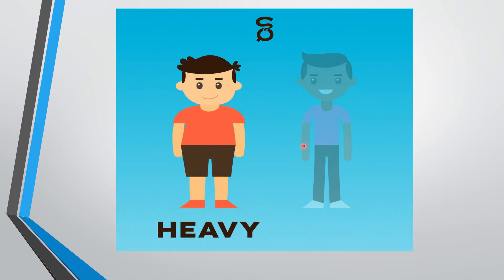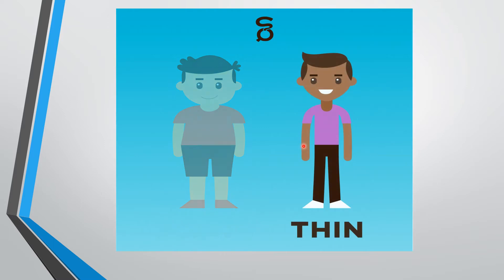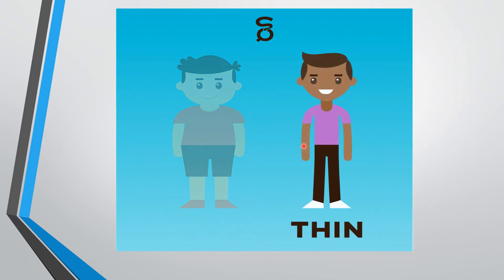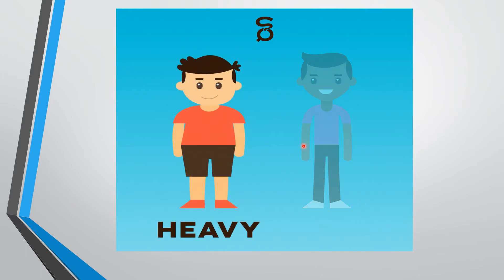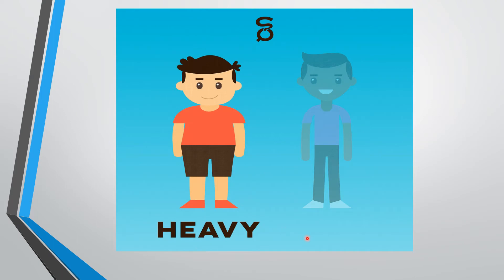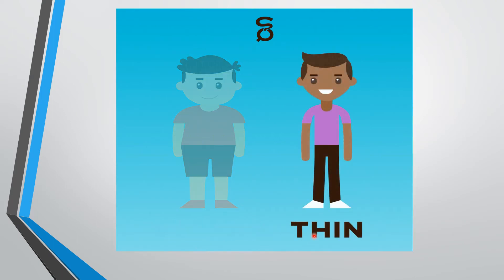So what is the very purpose of seeing all these examples? What we have done here is we described the nouns with the help of adjectives — like heavy, thin, young, old, tall, and short.